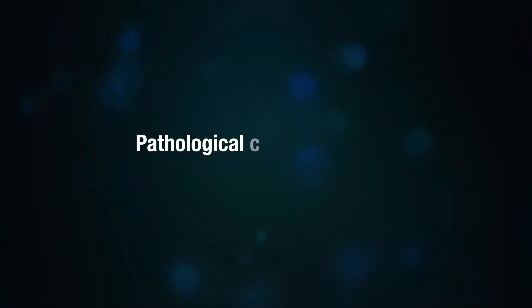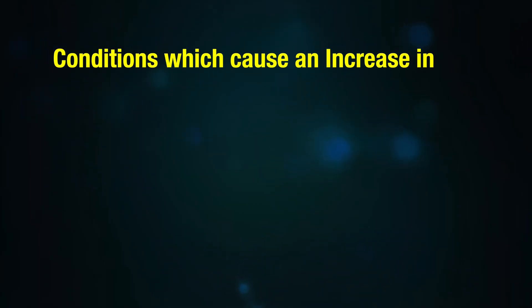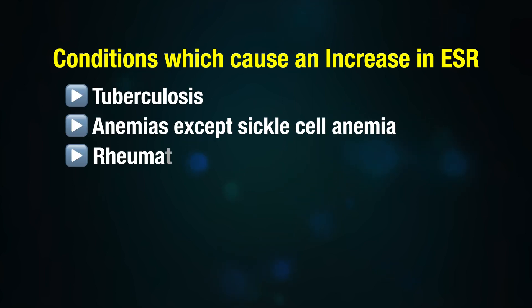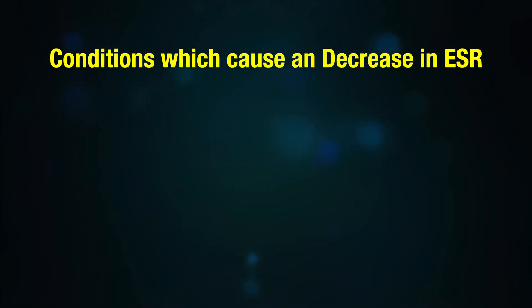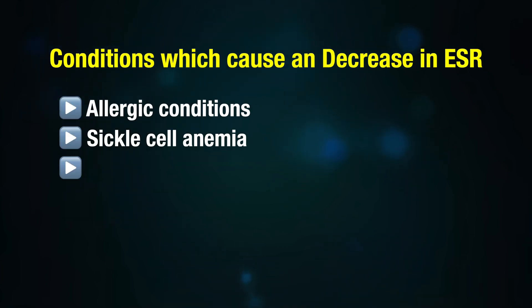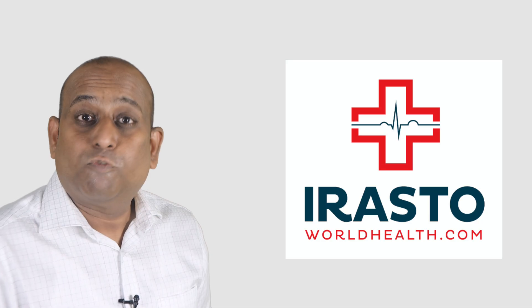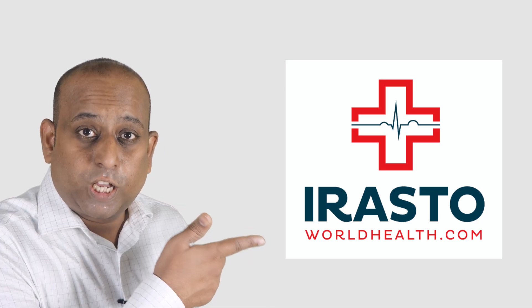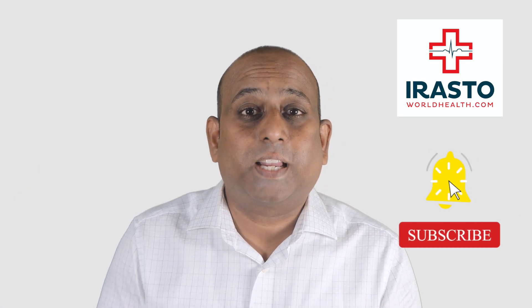These are physiological variations which are normal. Pathological conditions that cause an increase in ESR include tuberculosis, anemia (except sickle cell anemia), rheumatoid arthritis, rheumatic fever, and liver diseases. Conditions that cause a decrease in ESR include allergic conditions, sickle cell anemia, polycythemia, and severe leukocytosis. For more information, visit our website irastoworldhealth.com. Thank you for watching and see you in the next video.